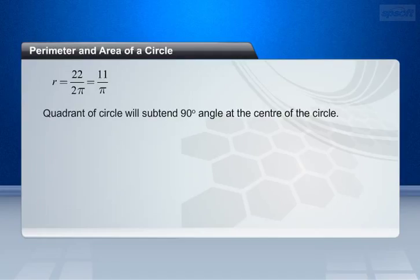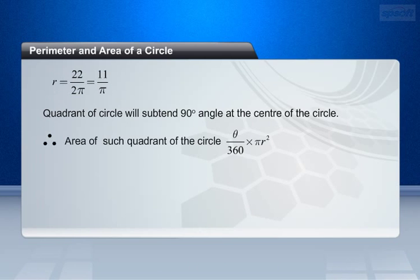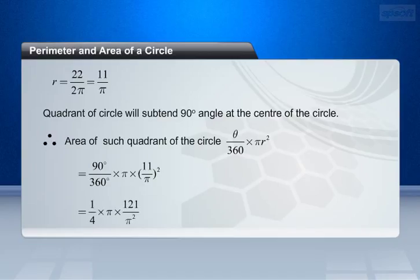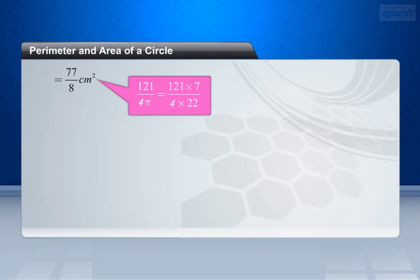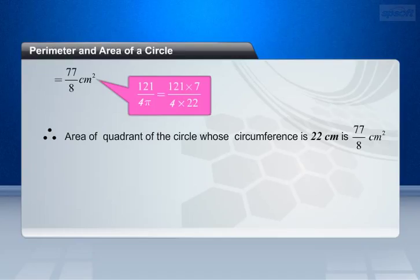We know that any quadrant of a circle will subtend 90 degrees angle at the center of the circle. Therefore, area of such quadrant of the circle equals theta by 360 into pi r square. This equals 90 degrees by 360 degrees into pi into (11 by pi) square, which equals 1 by 4 into pi into 121 by pi square, equals 121 by 4 pi, equals 121 into 7 by 4 into 22, equals 77 by 8 cm square. Therefore, the area of the quadrant of the circle whose circumference is 22 cm is 77 by 8 cm square.